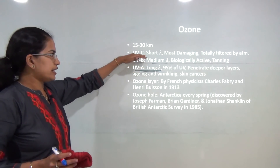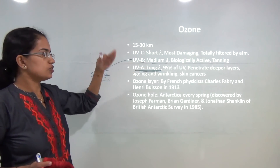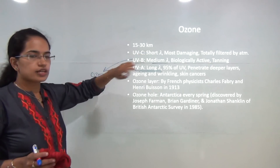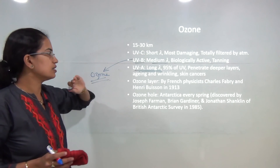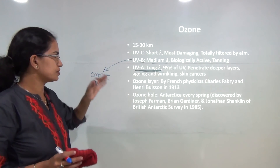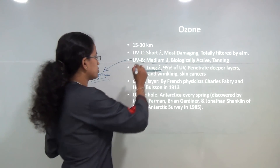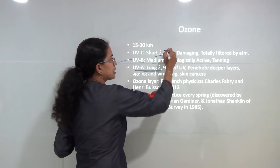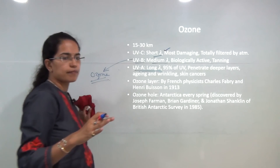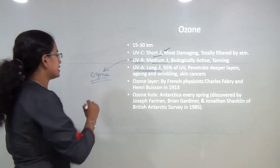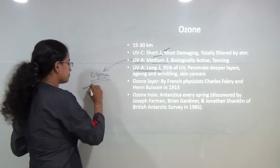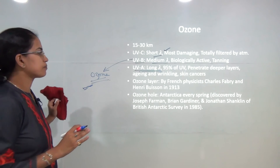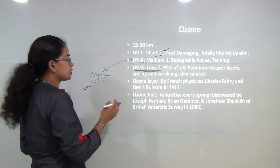Ultraviolet C cannot filter through the atmosphere. It is of short wavelength, and it is the most damaging, but it is confined to the upper layers of the atmosphere.